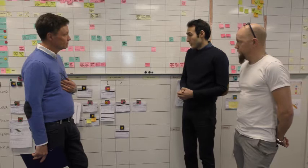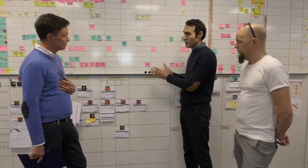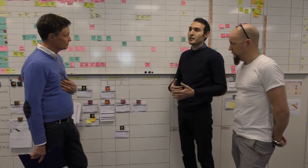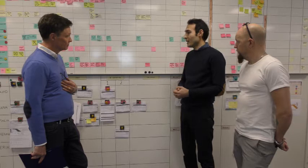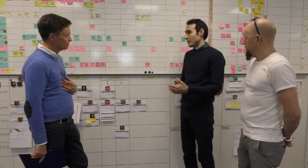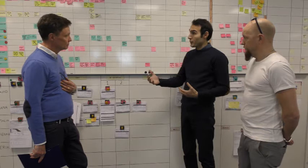Therefore we use a continuous improvement board with a weekly meeting. It's not that we only work during that one meeting per week — everyone continuously, every hour of work, if you find a problem or have an idea, you write it on paper and put it on the board. Then once per week we meet, go through the ideas and deviations, discuss together as a team, and continuously work to improve the processes afterwards.